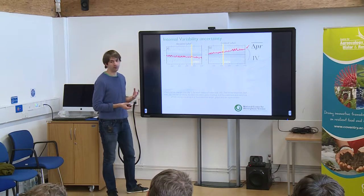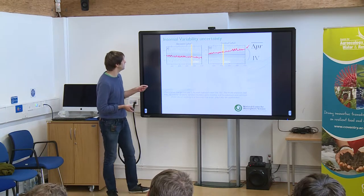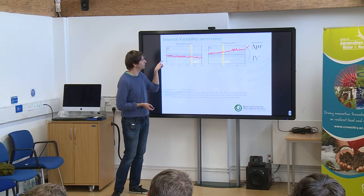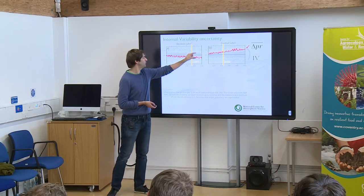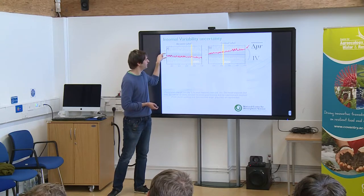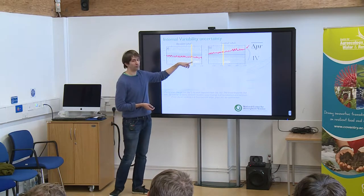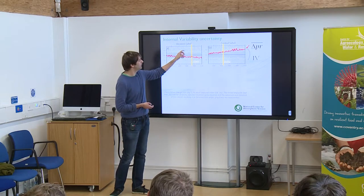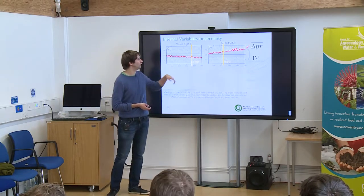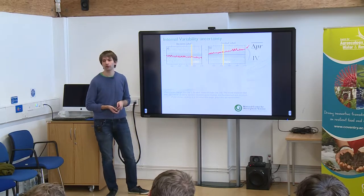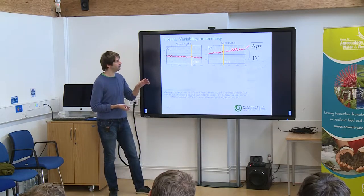Doing this more systematically: on the left, we have the change in precipitation over the western Sahel in JJA, showing a continuous decrease with time. The gray shading shows the spread among the 40 members — the internal variability component. I defined a time of emergence, which is when the forced response gets stronger than the internal climate variability — when the red line comes out of the gray shading. Over the western Sahel, we have to wait until the 2080s to get a signal we can define as robust. Over the central Sahel, we only have to wait until the 2050s — it happens more quickly.